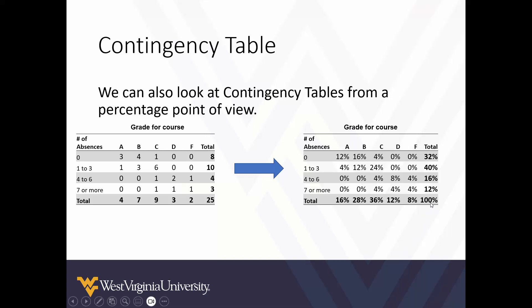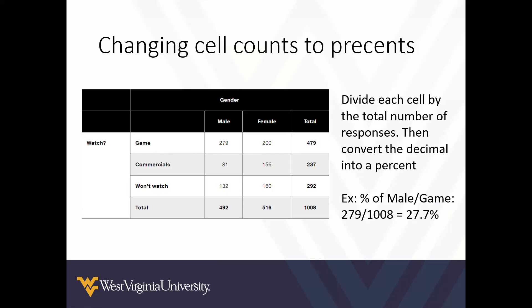We can keep doing this for each cell including the marginal distributions in our contingency table. Notice the grand total: 25 students corresponds to 100%. To change cell counts to percents, we divide each cell by the total number of responses, then convert that decimal into a percent.